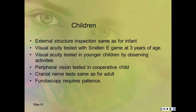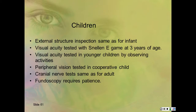In children, the external structure inspection is the same as for infants. Visual acuity with the Snellen E game starts at three years old—they indicate which way the E opens. In younger children, visual acuity is assessed by observing their activities. Peripheral vision is tested in a cooperative child. Cranial nerves are tested the same as in adults, and the fundoscopic exam requires practice, practice, practice.